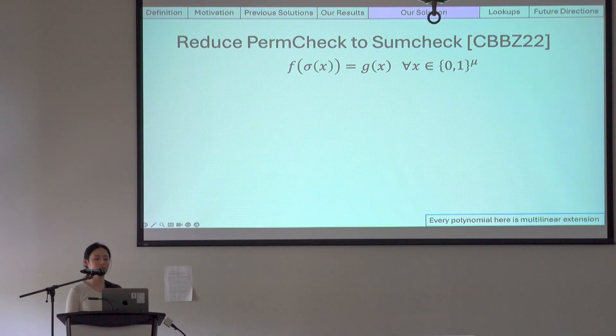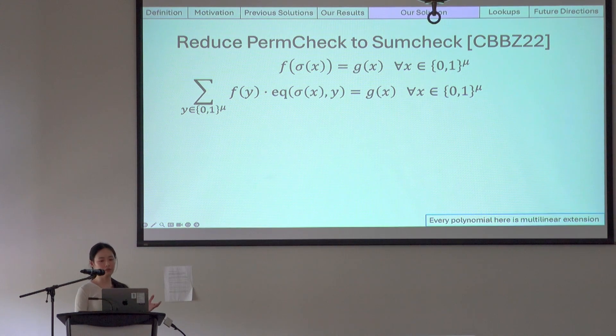All right, now let's dive into the details of our solution. In 2022, Hyperplonk introduced a way to reduce permutation check to sum check, but has undesired prover cost. We will start from that. So first, let's look at the naive formulation of permutation check. We observed that this term on the left is quadratic, so we can move it out of F by using a simple multilinear extension.